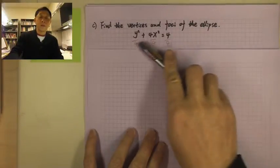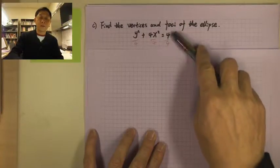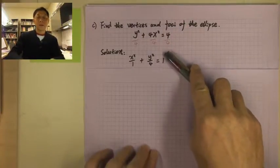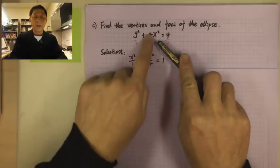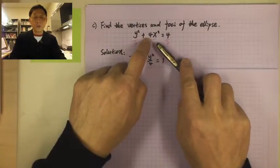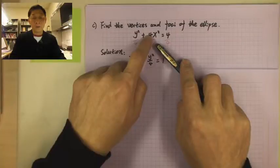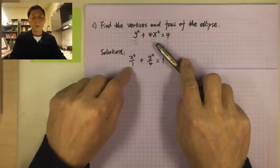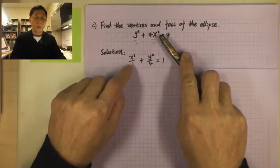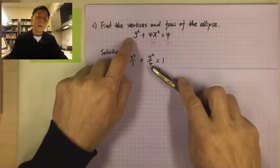If we divide everything by 4, then the right-hand side is going to be 1. There is a coefficient of 4 for x, with 4 in the denominator, so that becomes 1. So we get x squared over 1 plus y squared over 4 equals 1.